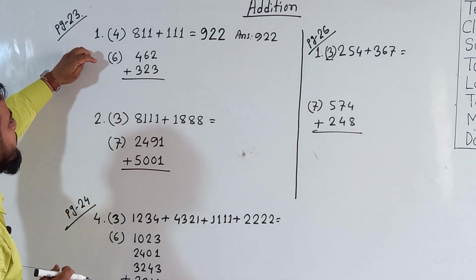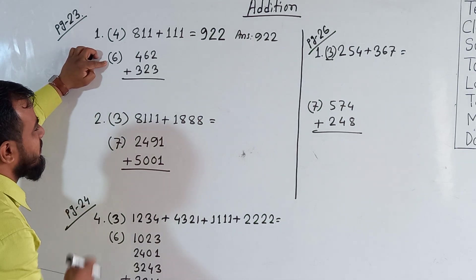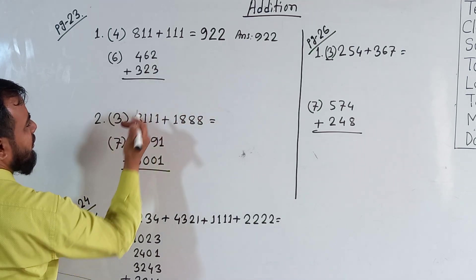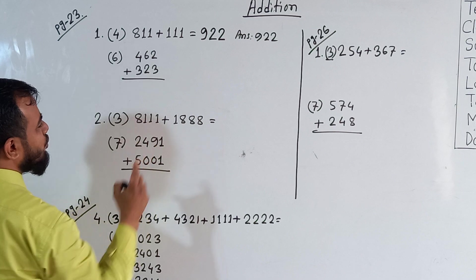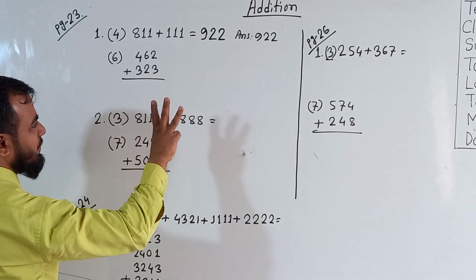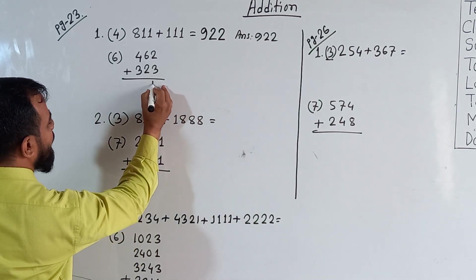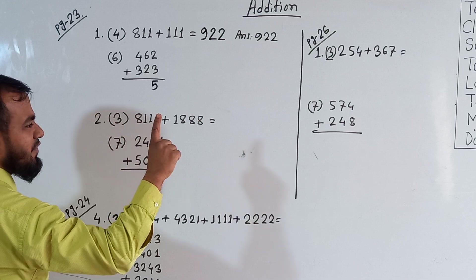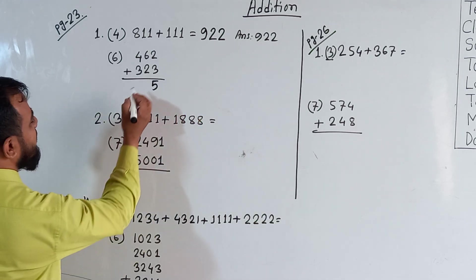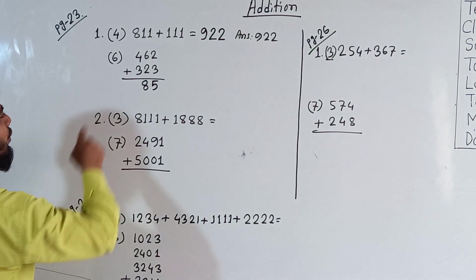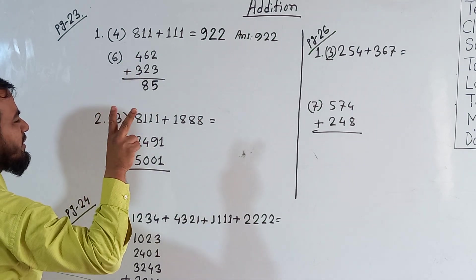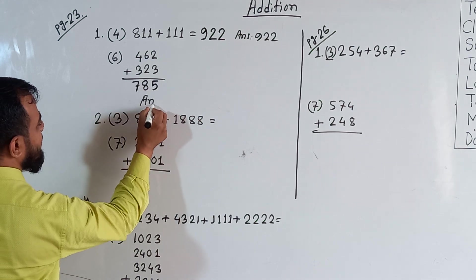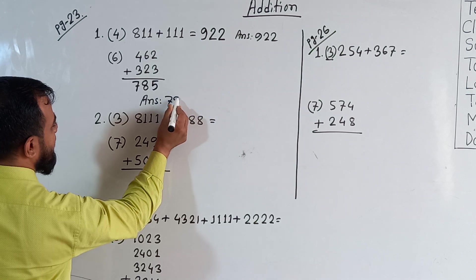Now sub-question number 6, which is already in vertical form — you can do this directly. We start from the right side for addition. 2 plus 3 is 5, so 5 in the 1's place. Then 6 plus 2 is 8, so 8 in the 10's place. And 4 plus 3 is 7, so 7 in the 100's place. Our answer is 785.